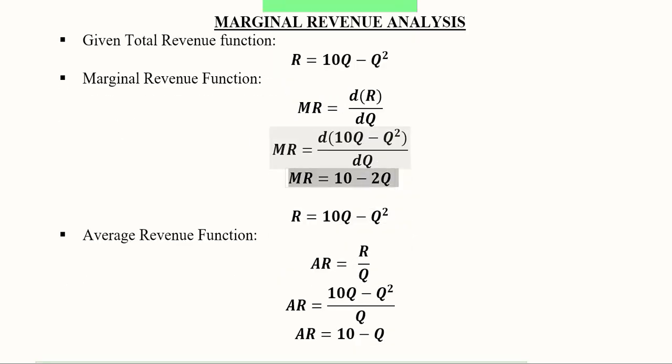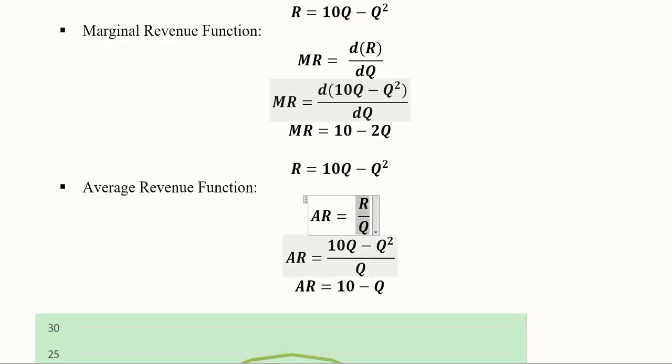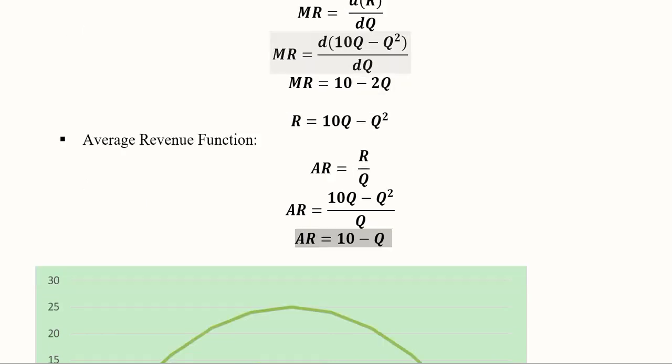So this was the marginal revenue. For average revenue, we can use the original revenue function, that is the total revenue function, and we can divide it with the value of Q. Here symbolically Q is given, so we will get this. After simplification, this is the average revenue function.